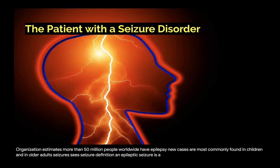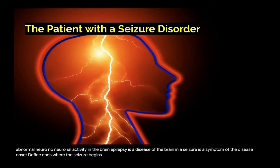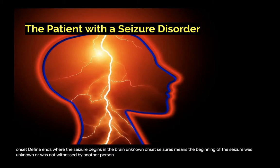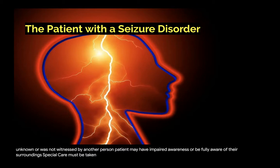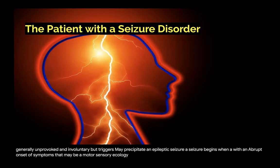An epileptic seizure is a transient occurrence of signs and symptoms due to abnormal neuronal activity in the brain. Epilepsy is a disease of the brain, and a seizure is a symptom of the disease. Onset defines where the seizure begins in the brain. Unknown onset means the beginning was unknown or not witnessed. Patients may have impaired awareness or be fully aware of their surroundings, and special care must be taken with impaired awareness seizures relating to patient safety. Seizures are generally unprovoked and involuntary, but triggers may precipitate an epileptic seizure. Onset may be motor, sensory, cognitive, or emotional, depending on which cells or parts of the brain are involved.